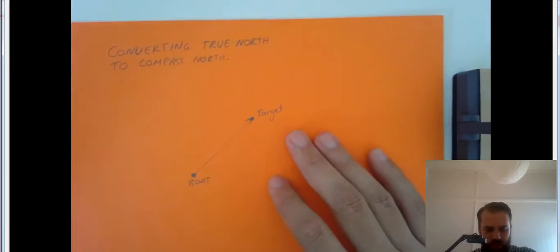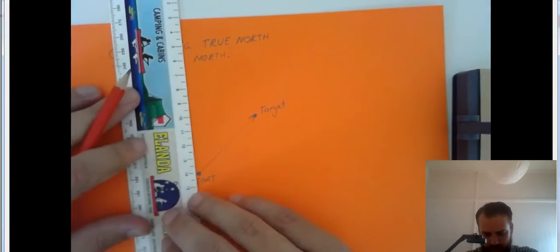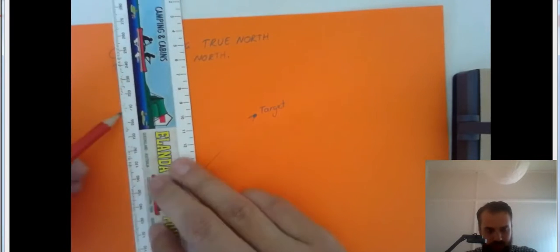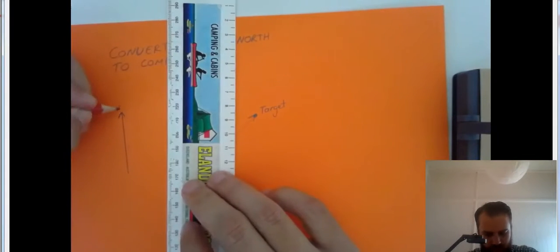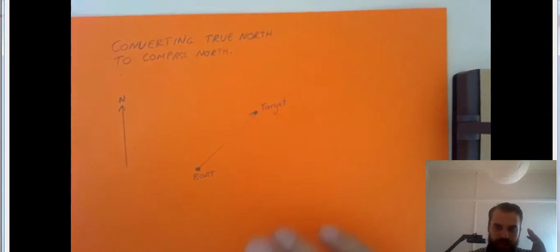Our maps are all done with North. I'll just draw up a North arrow here. Now that North, it points towards True North. It points towards the top of the apple.